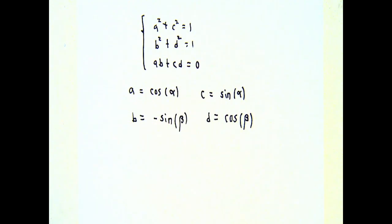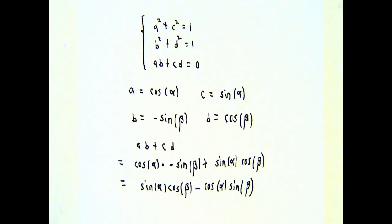So, it's easy to make the first two equations happy. What's not so easy is to see that I can make the third one true, as well, with a's, b's, c's, and d's that look like this. So, if I write down, using my angle representation, a times b plus c times d, which we want to be zero, after we put the trig functions in, it's sine alpha cosine beta minus cosine alpha sine beta. And, if you remember your trigonometry, you're thinking, wait one minute here.